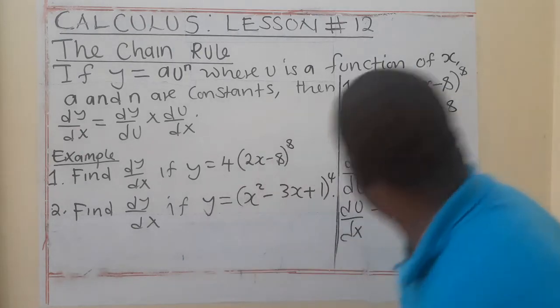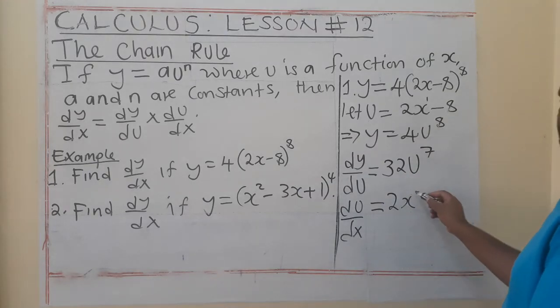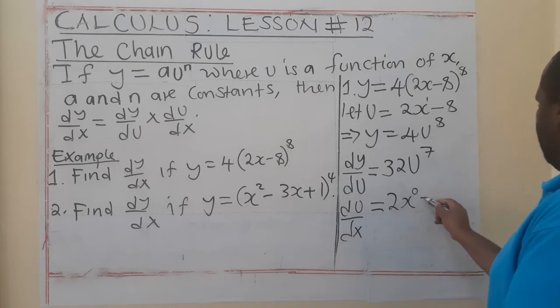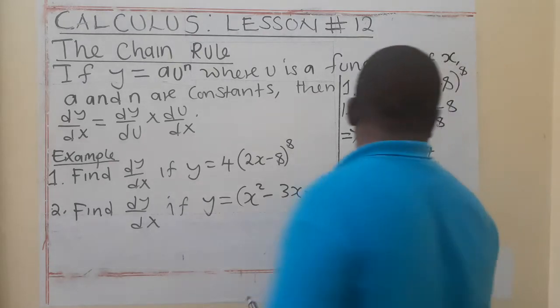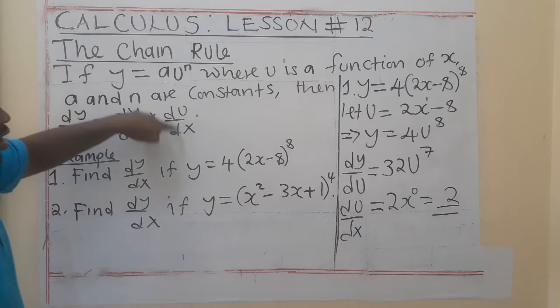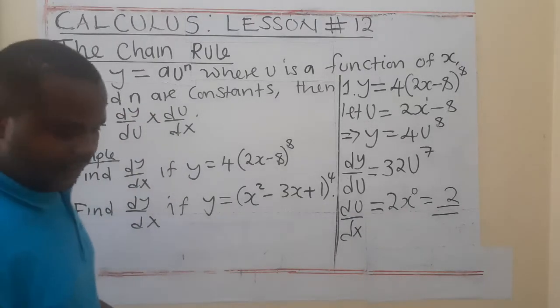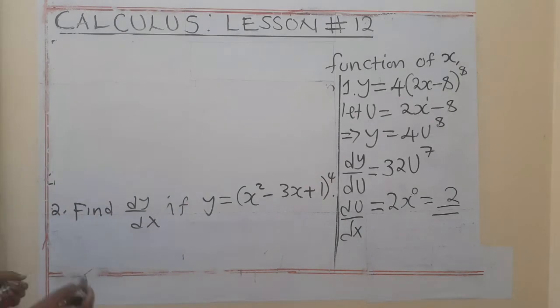So, we are going to have a 0 here, which will be what? x to the power 0 is 1. 1 by 2, you have got 2. So, now, we are saying, for us to find this, we need to say dy/du by du/dx.